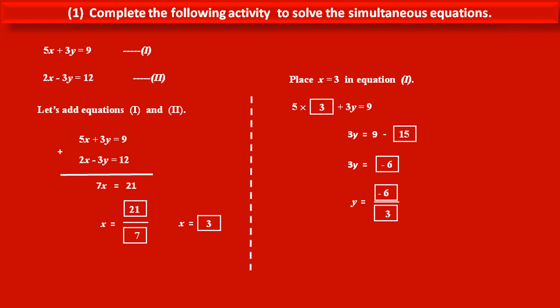So dividing both the sides by common factor 3, we get y is equal to, at the numerator, minus 6, and at the denominator, 3. So solving this, we get y is equal to minus 2. This is the value of variable y.